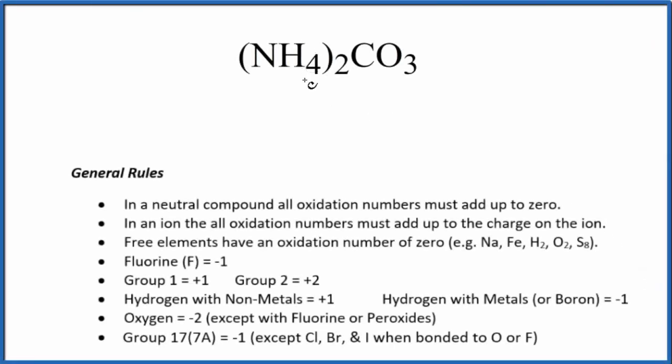In this video, we'll find the oxidation numbers for each element in (NH₄)₂CO₃. This is ammonium carbonate. The first thing we need to realize is that overall, this is a neutral compound, but we have two ions here. We have the ammonium ion and the carbonate ion.